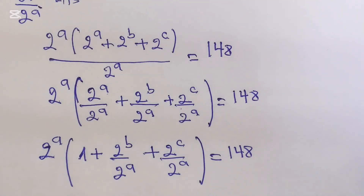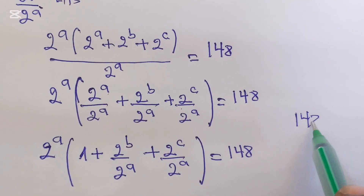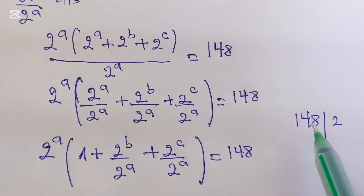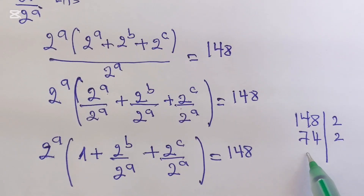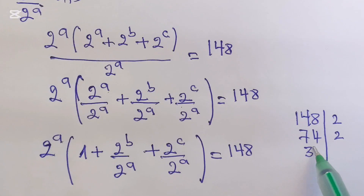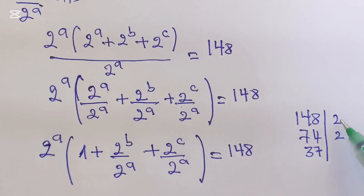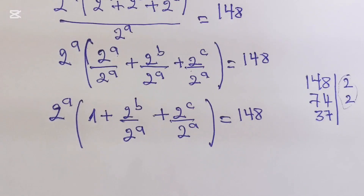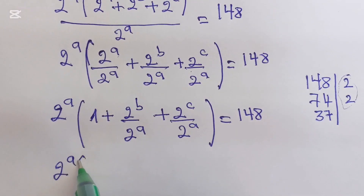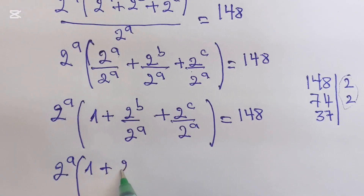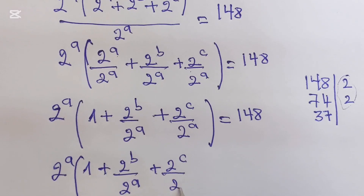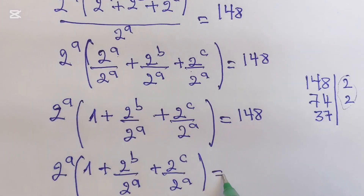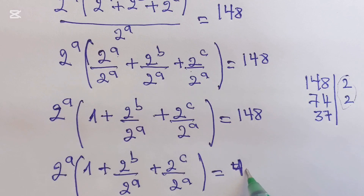We can find factors of 148. Dividing by 2 gives 74, and by 2 again gives 37. So we can write 148 as 37 times 4, which is 2^2. This means 2^A times (1 + 2^B over 2^A + 2^C over 2^A) equals 4 times 37.